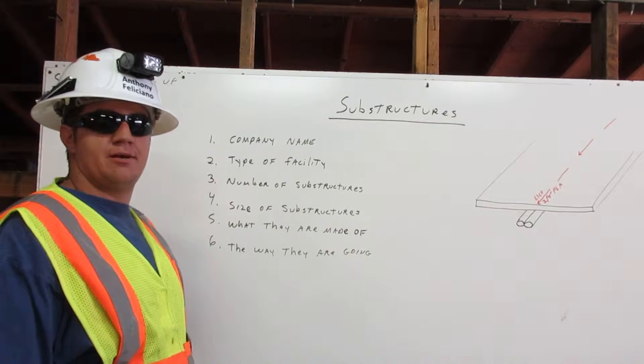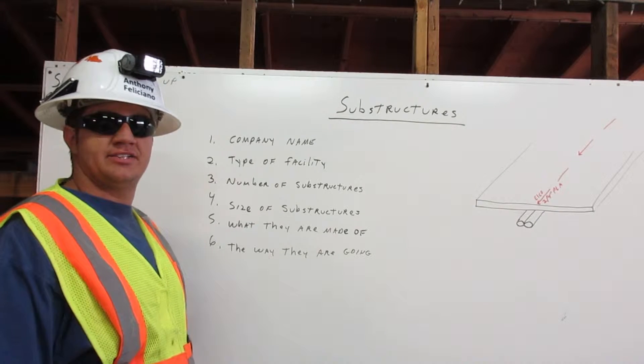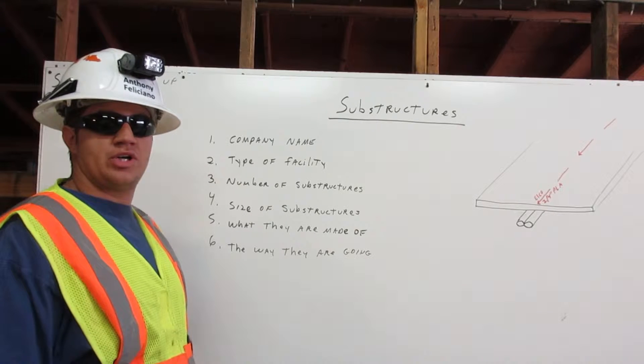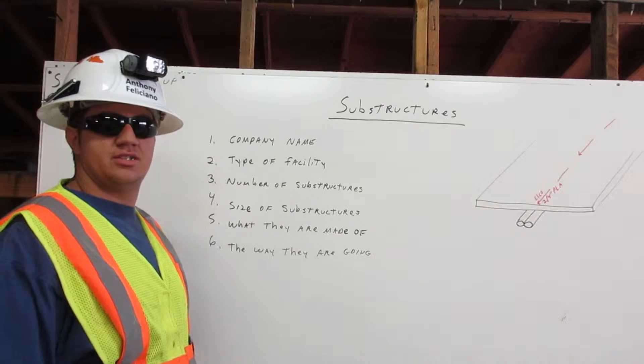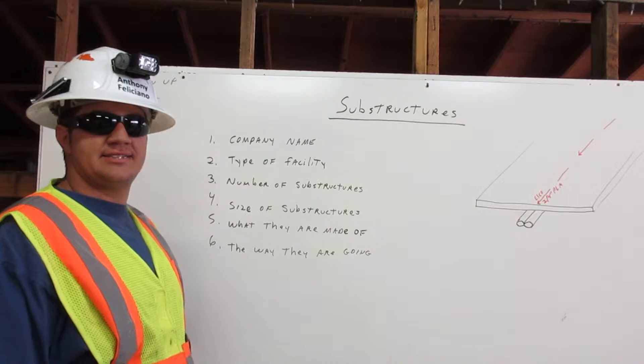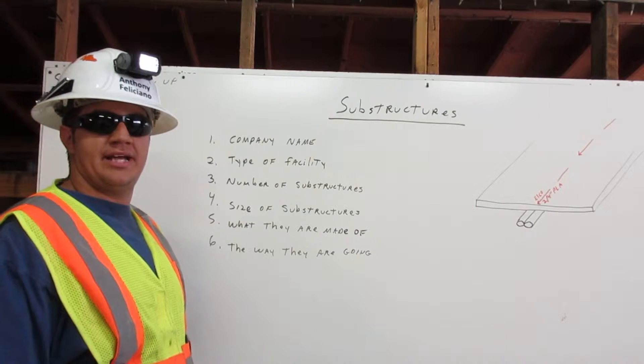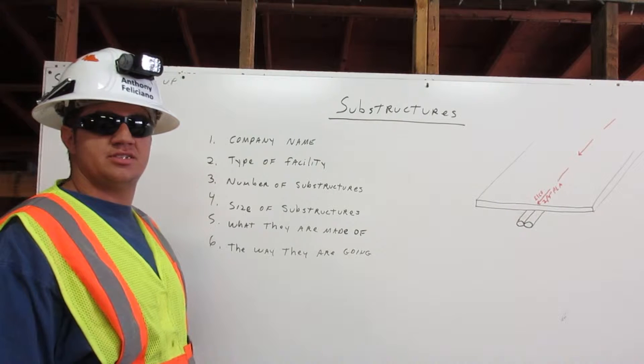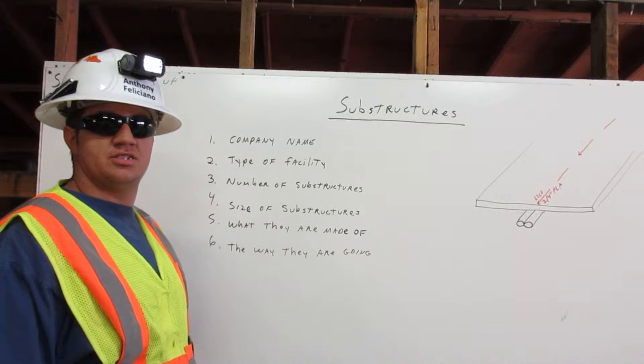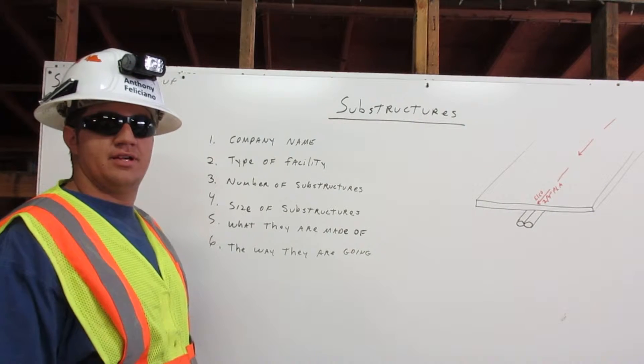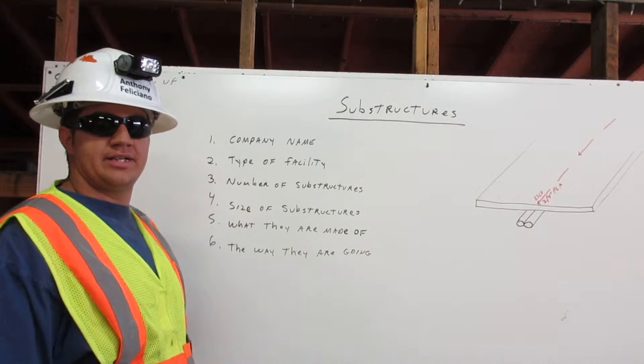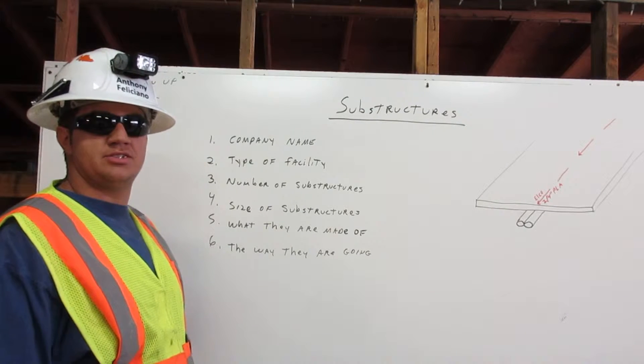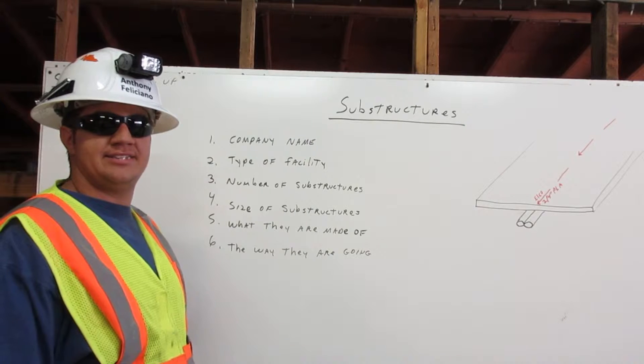Facility operators are required to provide excavators with information regarding their substructures. They leave markings that tell us their company name, type of facility, number of substructures, size of substructures, what they are made of, and the way they are going. Here I am going to explain to you how to identify these substructures.